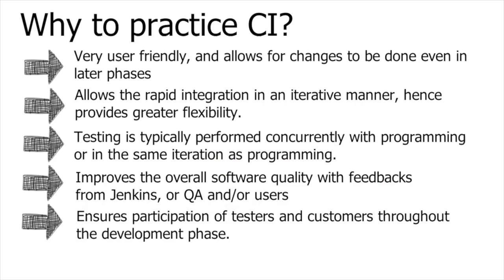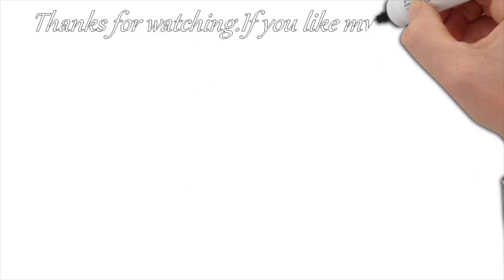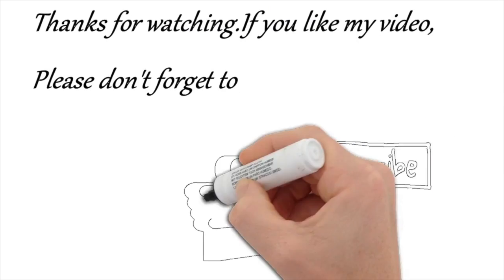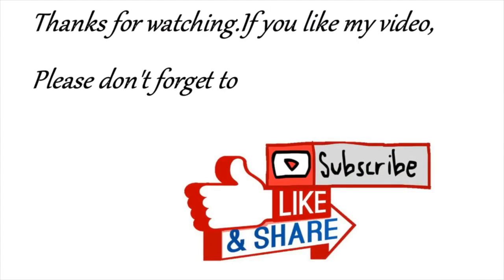It improves overall quality with the feedback received from Jenkins, the quality analysis team, and users. It ensures participation of testers and customers throughout the development phase — they can provide their feedback at any point in any iteration. We don't have to wait until the last stage like in a traditional model. As and when a build is ready it is tested, and inputs are incorporated by developers until we receive the best quality product.